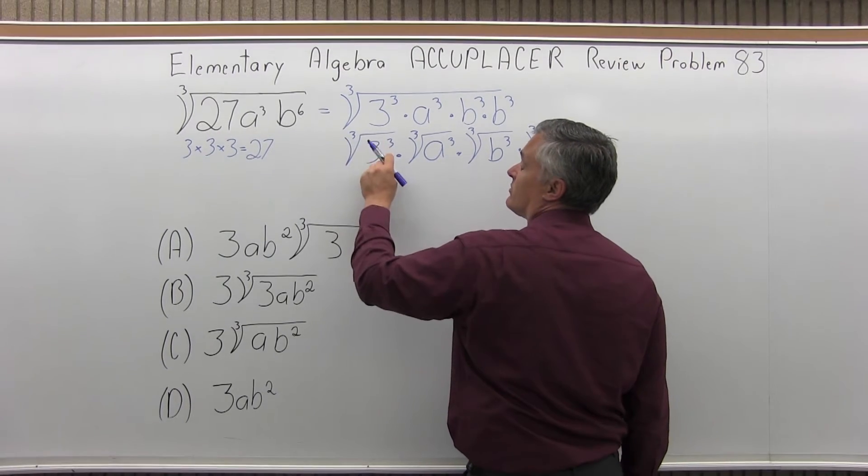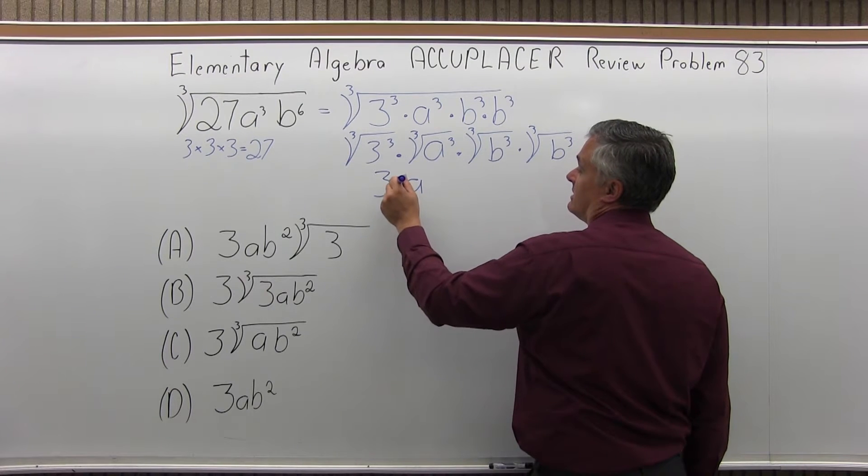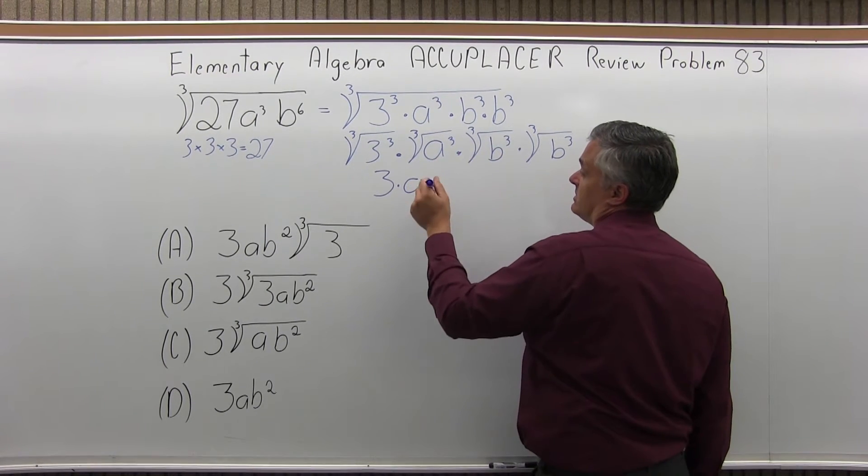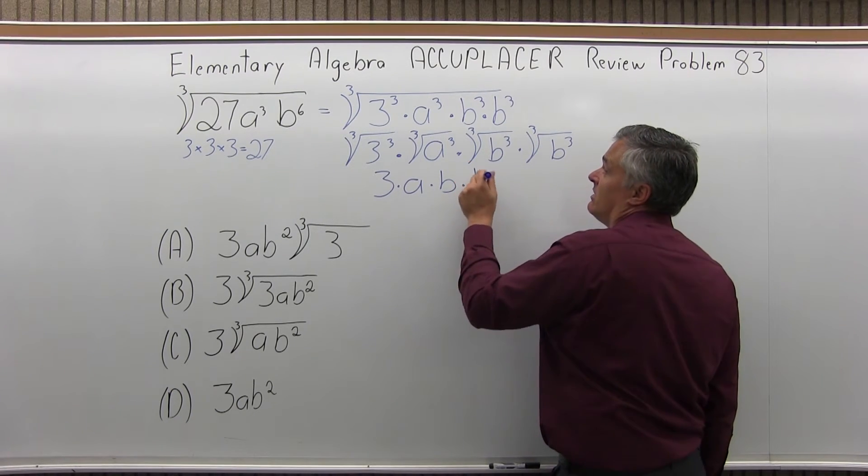So now, cube root of 3³ is just 3. Cube root of a³ is just a. These are multiplied. Cube root of b³ is just b. And cube root of b³ again is just b.